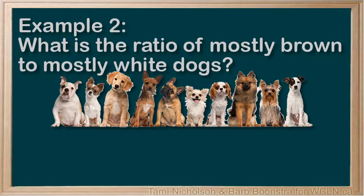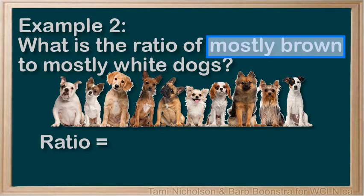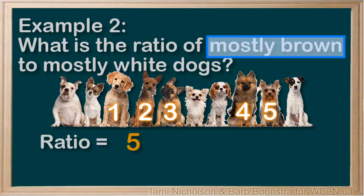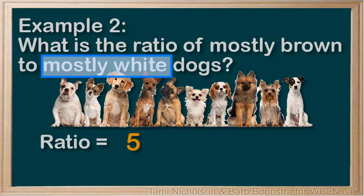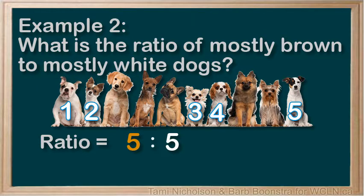Consider our dogs. What is the ratio of mostly brown dogs to mostly white dogs? We say mostly brown first, so let's count the dogs that are mostly brown: 1, 2, 3, 4, 5. So we'll put down a 5. Next, we look for the mostly white dogs: 1, 2, 3, 4, 5. We put down another 5. And put a colon between them — 5 to 5. For every 5 brown dogs, there are 5 white dogs.